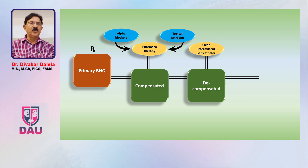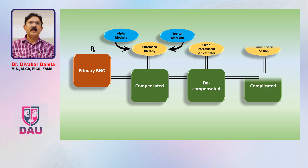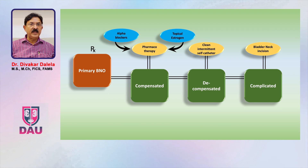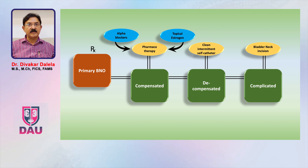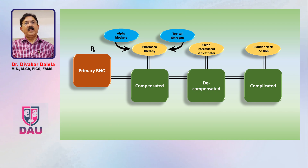If it is a little more advanced in a decompensated phase, where the patient is retaining significant post-void residual urinary volume, these patients require clean intermittent self-catheterization. Or if the patient has come in a complicated stage where she has developed retention of urine or dilated upper tracts, I have performed bladder neck incision in these patients — there is a video on YouTube showing my technique of incising the bladder neck in females.